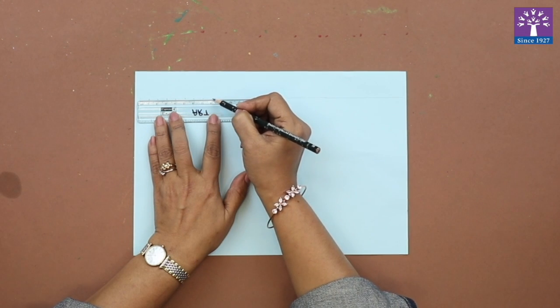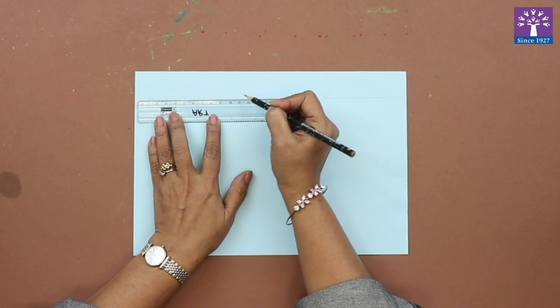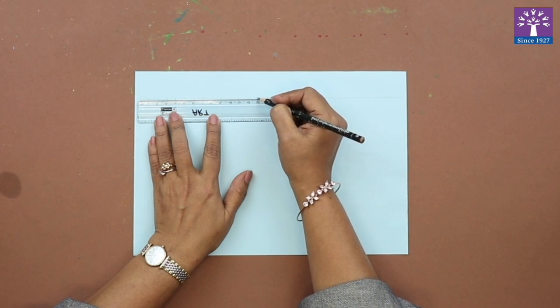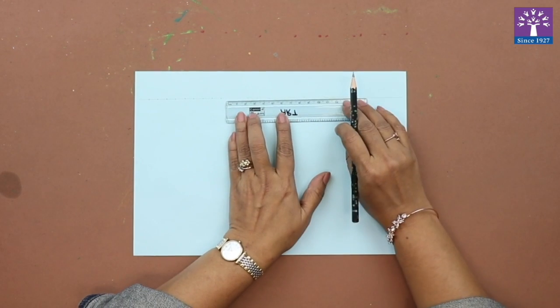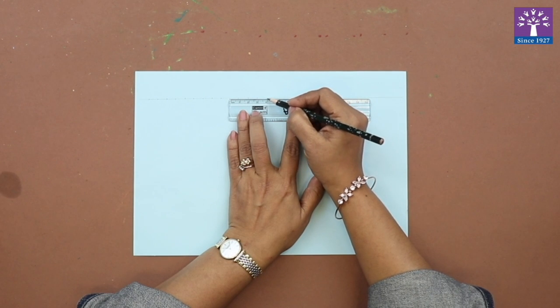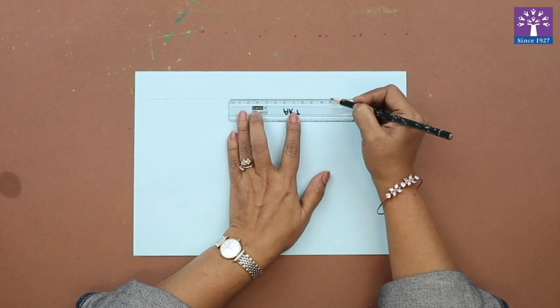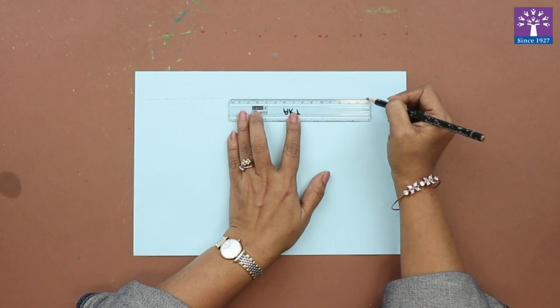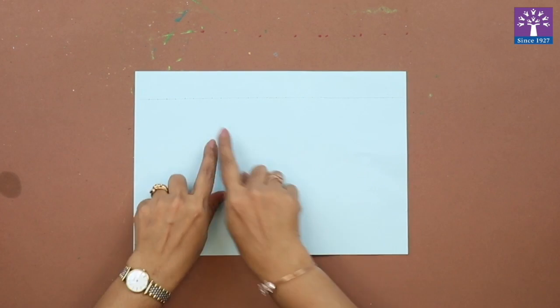See, we've made the marks on the line. These are one centimeter markings, so we've got a straight line with one centimeter markings.